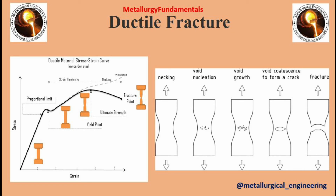Tensile fracture of a relatively thin section of a ductile metal may be entirely slant fracture. As the thickness increases, however, the percentage of slant fracture around the central origin area will decrease, sometimes resembling a picture frame on a relatively thick rectangular section.